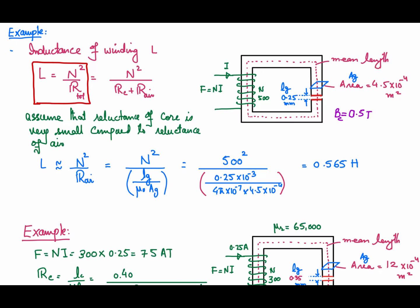Observing the flux path, it passes through both the core and the air gap. The core has permeability μ₀μᵣ while the air gap has only μ₀. We must calculate the core reluctance and the air gap reluctance separately because of the difference in permeability.